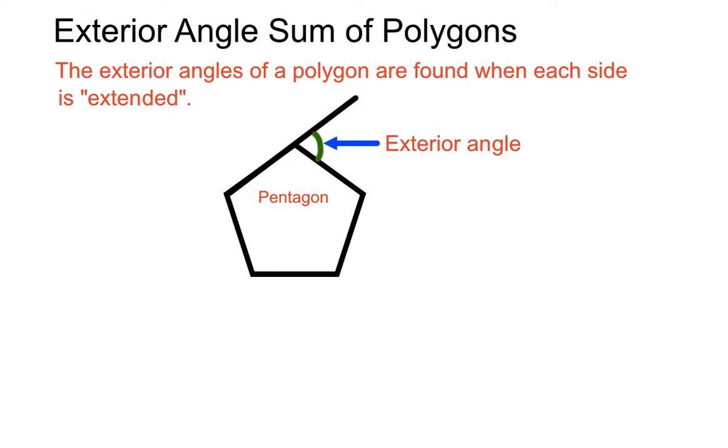Now if we extend lots of the different sides here, we get a whole bunch of exterior angles. And if we add them up, we get a certain result. That's pretty amazing really. So we have exterior angles. We can create an exterior angle from each of the sides if it gets extended.